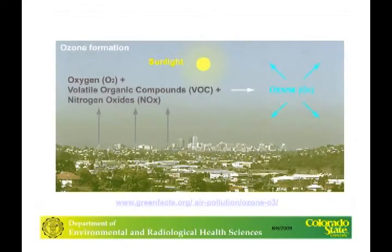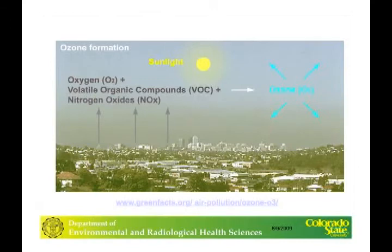Ozone is a secondary pollutant formed in the atmosphere. The necessary compounds needed to make ozone include volatile organic compounds, or VOCs, which are a byproduct of combustion processes including fuel combustion — other sources include solvents or paints around the house. The other necessary component is nitrogen oxides, emitted from combustion sources including diesel and gasoline automobiles as well as stationary sources. When these two components are present in the atmosphere with UV radiation or sunlight, they combine to create ozone, which is why you see high ozone levels during sunny, hot summer days.